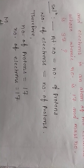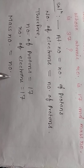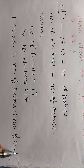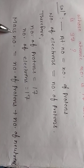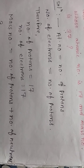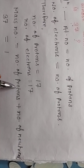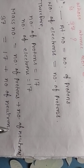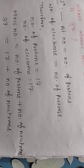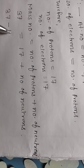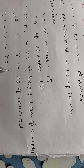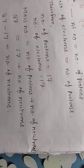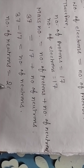Mass number is equal to number of protons plus number of neutrons. So, number of neutrons is equal to mass number minus number of protons, which equals 37 minus 17, giving 20 as the answer.